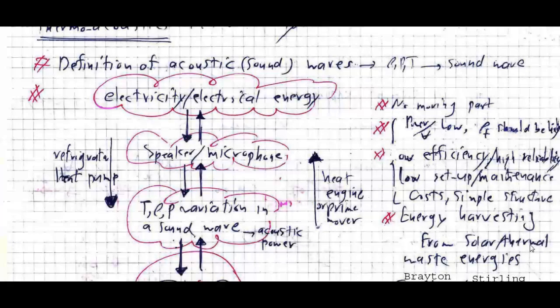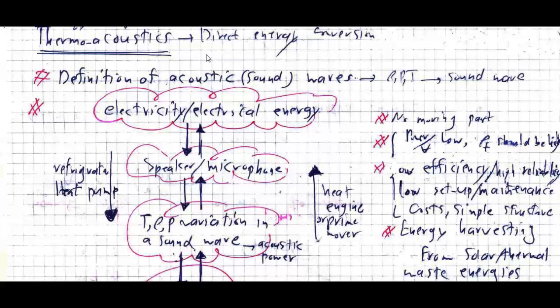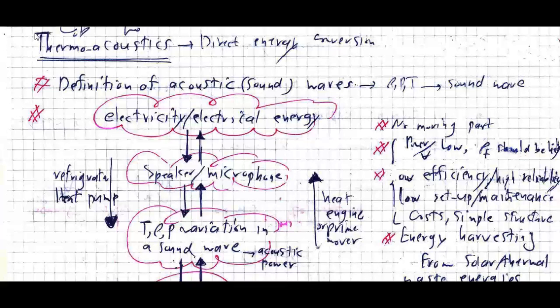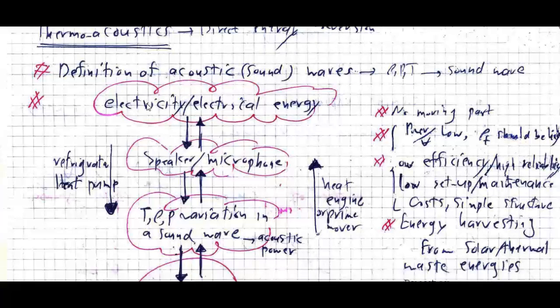In today's lecture I'm going to talk about one of the various types of direct energy conversion called the thermoacoustic method. As it's obvious from the title, the thermoacoustic device is the connection between thermal energy — referring to a temperature difference between two reservoirs — and acoustic power, which is related to the propagation of sound with the velocity of sound in a gas. Converting thermal energy to acoustic power is a type of direct energy conversion (DEC) called thermoacoustics.